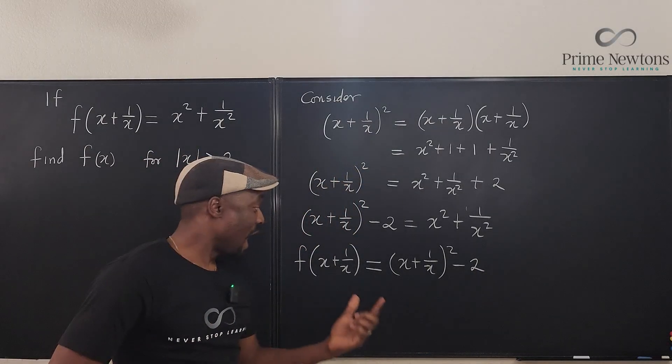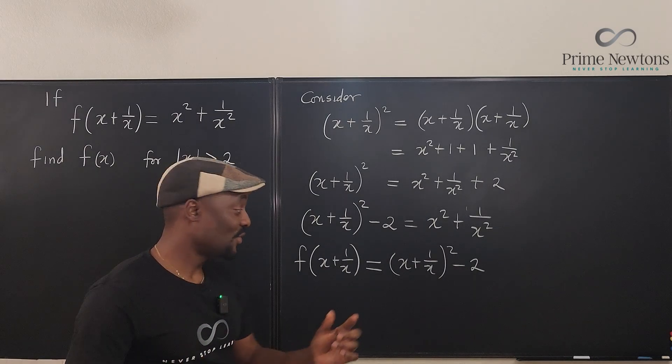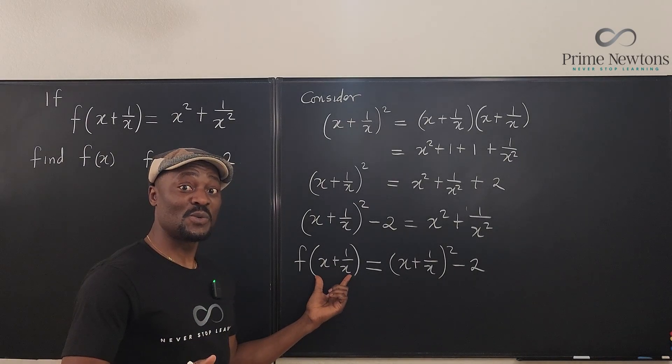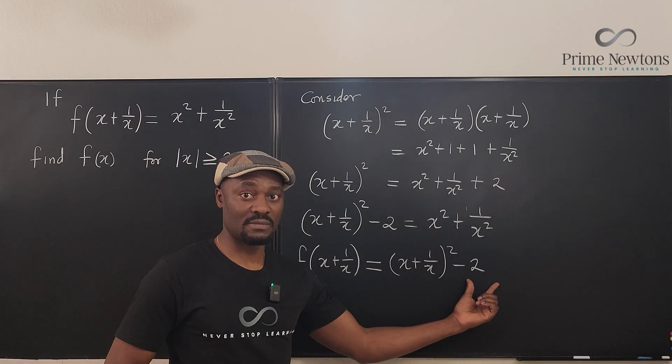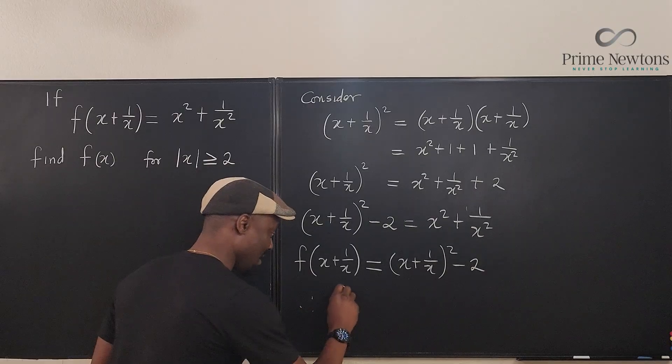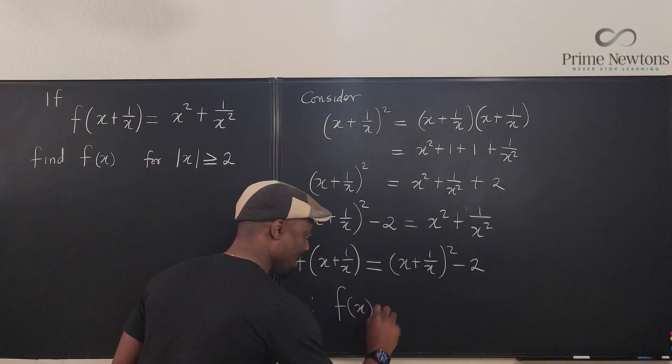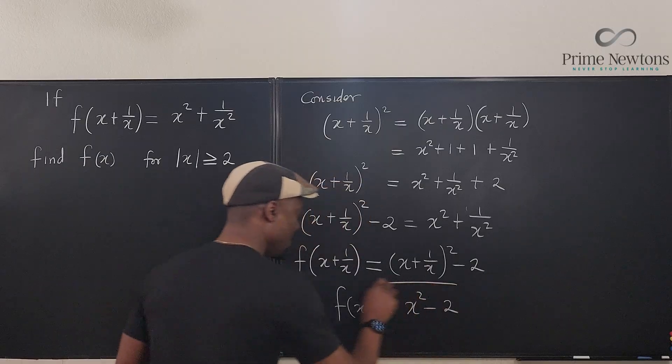So that means I can clearly say that when you give something to f, what does it do with it? It squares it and then subtracts 2 from it. So I can say, therefore, f of x is equal to x squared minus 2. This is the function.